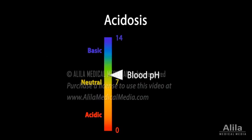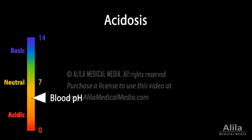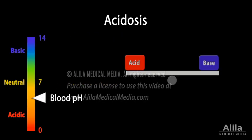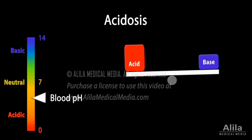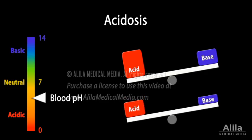Acidosis refers to a process that causes increased acidity in the blood and body's tissues. The body's blood pH is maintained by the balance between acids and bases. Acidosis occurs when acids accumulate or bases are lost.